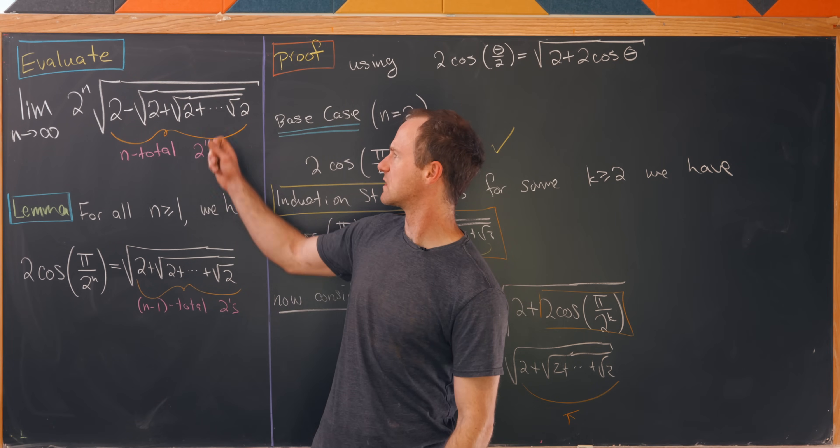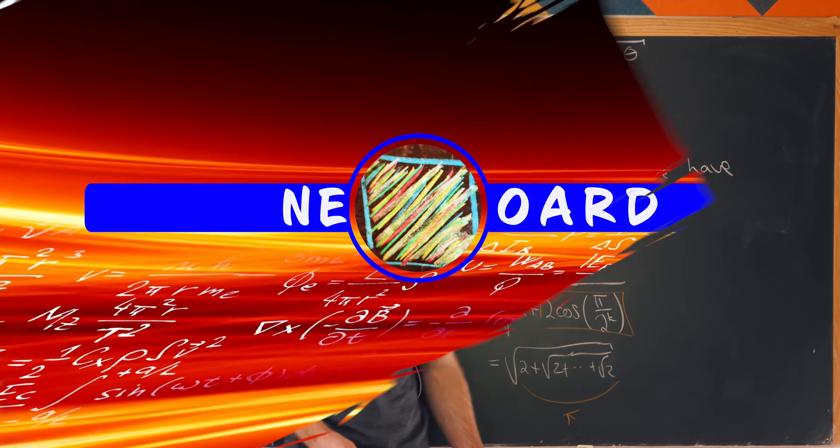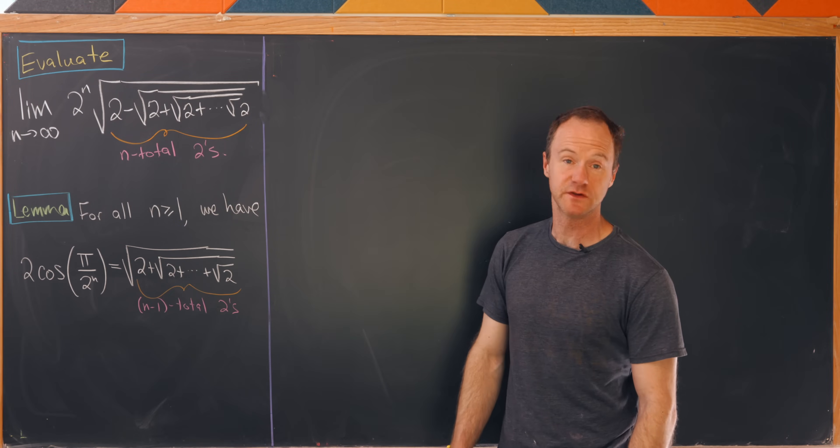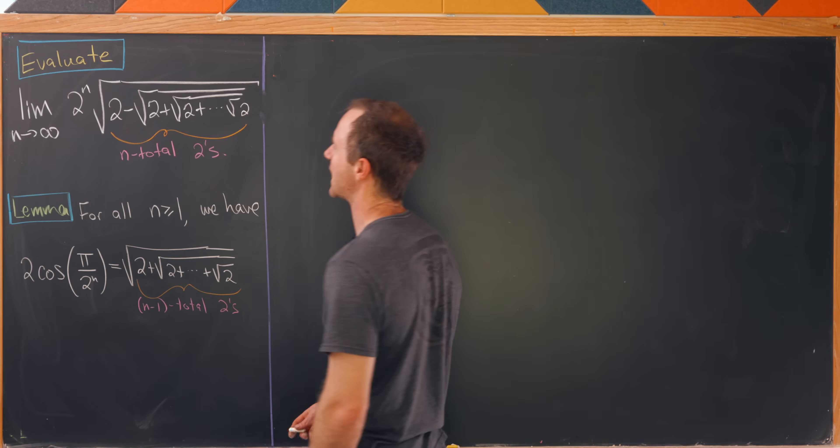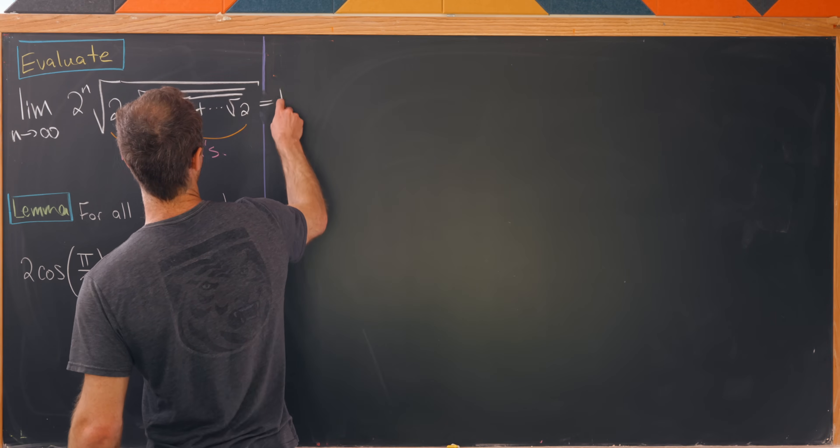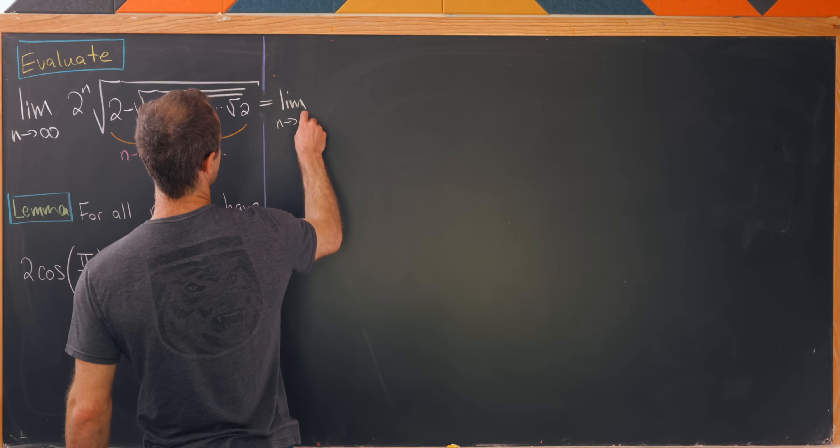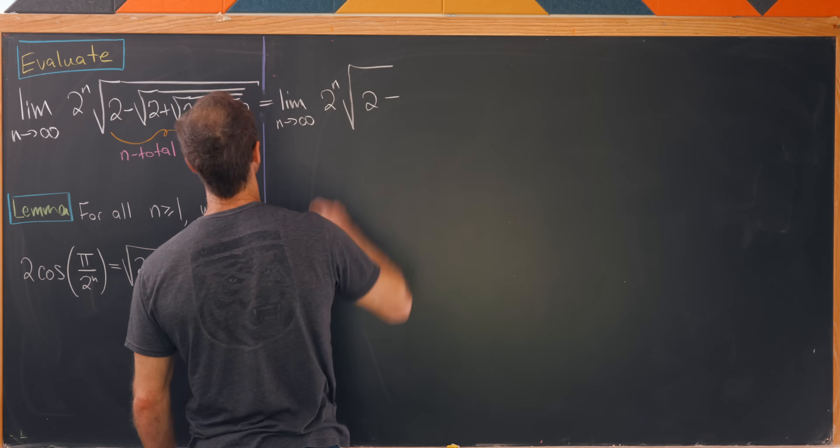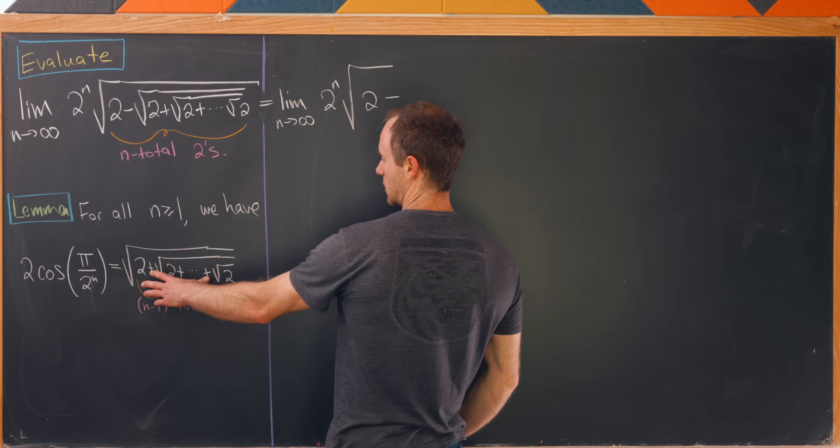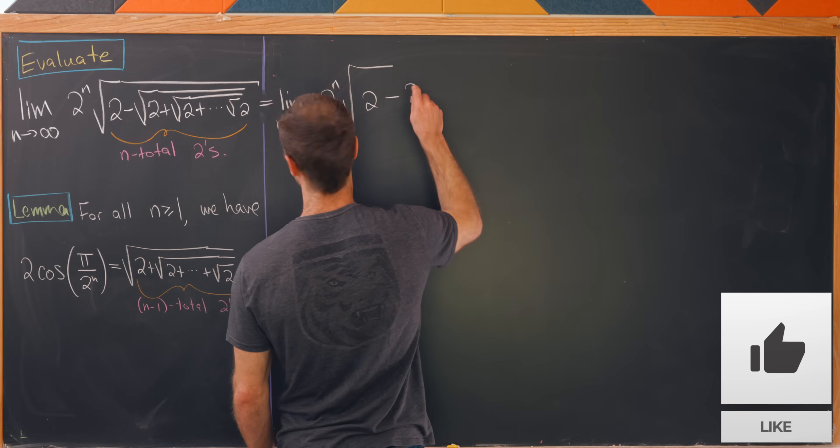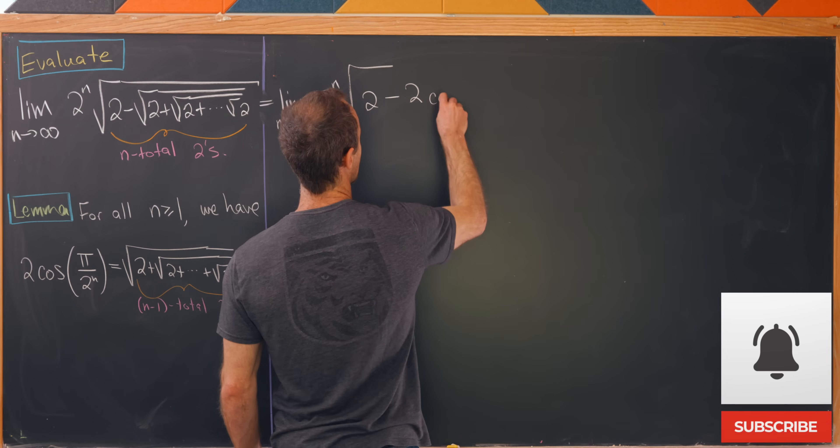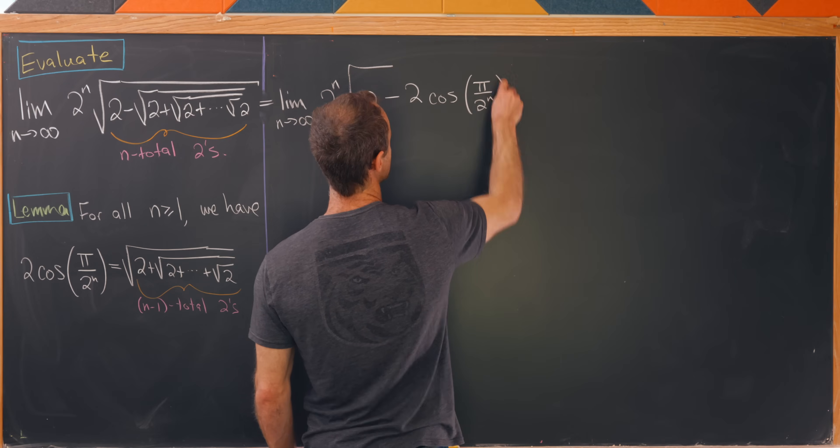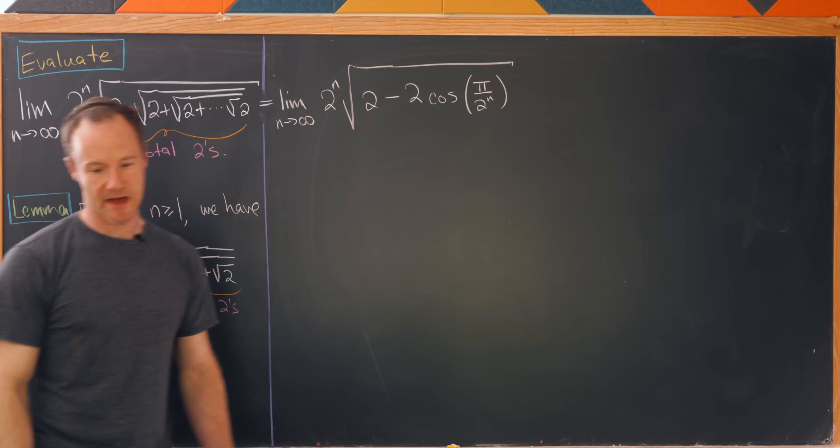Now let's see how that relates to our setup. We're ready to apply this lemma involving the cosine function to our setup. We'll have the limit as n approaches infinity, we still have 2 to the n. Now we have the square root of 2 minus all of this stuff on the right hand side, but I can rewrite that as 2 times the cosine of pi over 2 to the n.